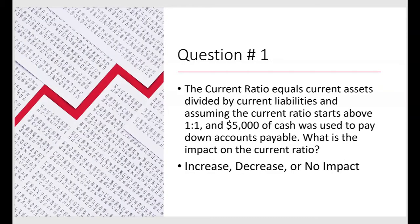Question one: the current ratio equals current assets divided by current liabilities. Assuming the current ratio starts above one to one and five thousand dollars of cash was used to pay down accounts payable, what is the impact on the current ratio — did it increase, decrease, or have no impact? The transaction means current assets and current liabilities are both going down by the same amount, with cash in the numerator and accounts payable in the denominator.